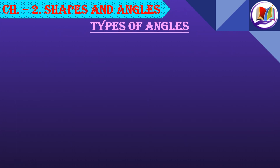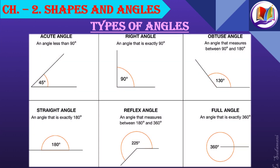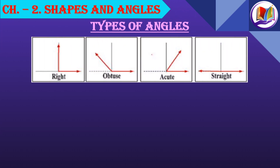Let's recall the types of angles we have learnt. Acute angle: an angle less than 90 degrees. Right angle: an angle exactly 90 degrees. Obtuse angle: an angle between 90 degrees and 180 degrees. Straight angle: exactly 180 degrees. Reflex angle: between 180 degrees and 360 degrees. Full angle or complete angle: exactly 360 degrees. I hope all the different types of angles are clear. This short representation will help us understand the various types of angles easily, and you can even use the palm of your hand to identify them.